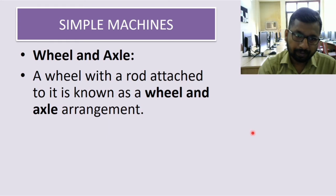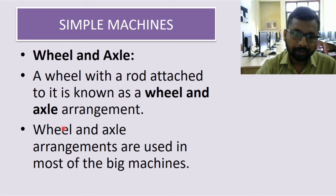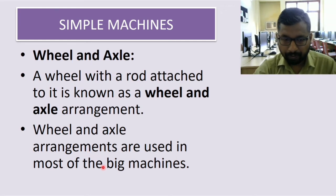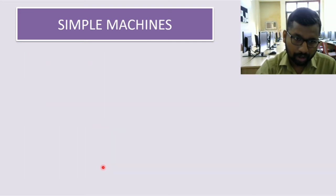A wheel with a rod attached to it is known as wheel and axle arrangement. Wheel and axle arrangements are used in most of the big machines. In fact, the big machines that we use which are complicated ones are made up of simple machines, and wheel and axle are many times used in vehicles and other such big machines.